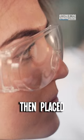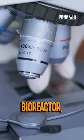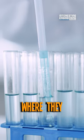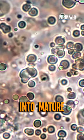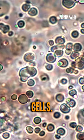These cells are then placed in a bioreactor, a controlled environment where they multiply and differentiate into mature milk-producing cells.